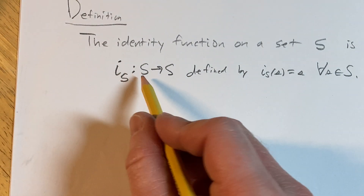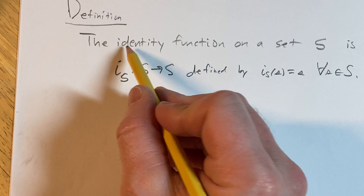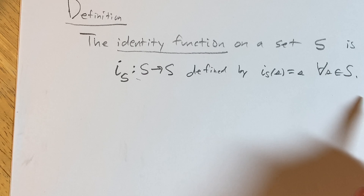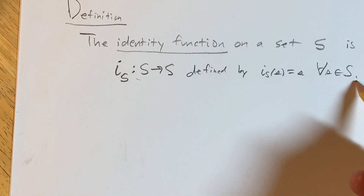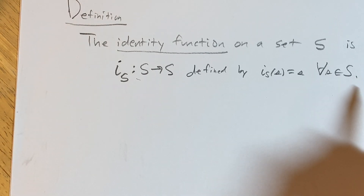It basically just sends every element to itself, hence the name the identity function. And that is the definition. I hope this has been helpful. Take care.